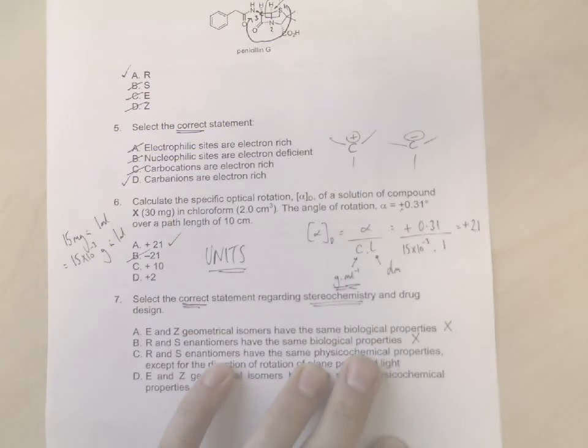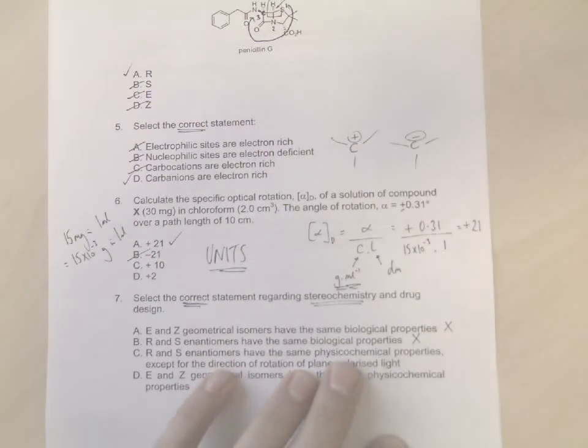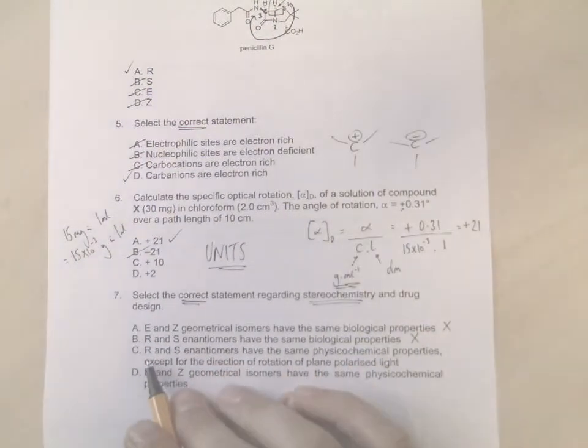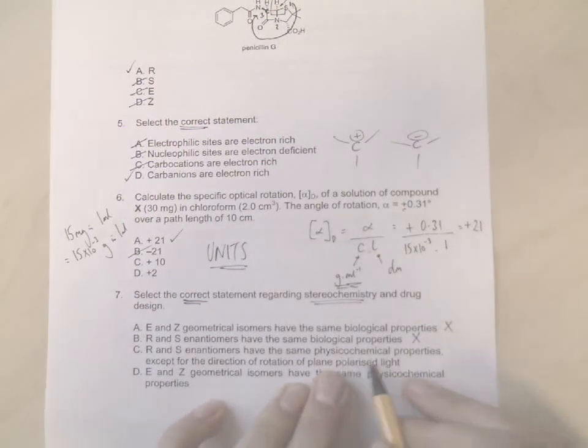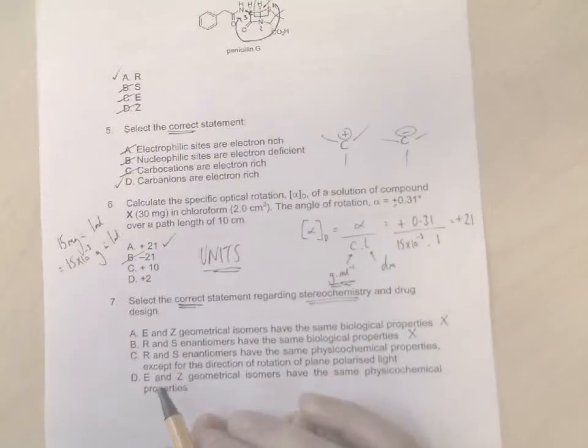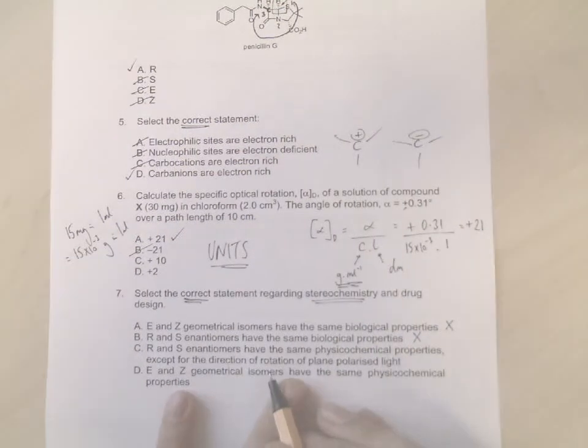R and S enantiomers have the same biological properties? Well that's wrong as well, because again in lectures we gave some examples of molecules which smell of lemons and oranges, or spearmint and caraway. We also talked about thalidomide. So different enantiomers having different biological properties when they interact with your body.